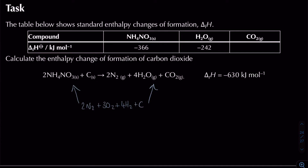Carbon as a solid in its standard state has ΔHf = 0, and nitrogen gas similarly has ΔHf = 0. For the reactants we use 2 times minus 366; for the products, 4 times minus 2 (for two moles), plus one lot of x representing the unknown ΔHf of CO₂.